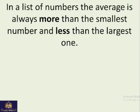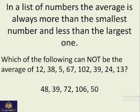Let's move on to more properties of averages. In a list of numbers, the average is always more than the smallest number and less than the largest one. For example, which of the following cannot be the average of 12, 38, 5, 67, 102, 39, 24, and 13?